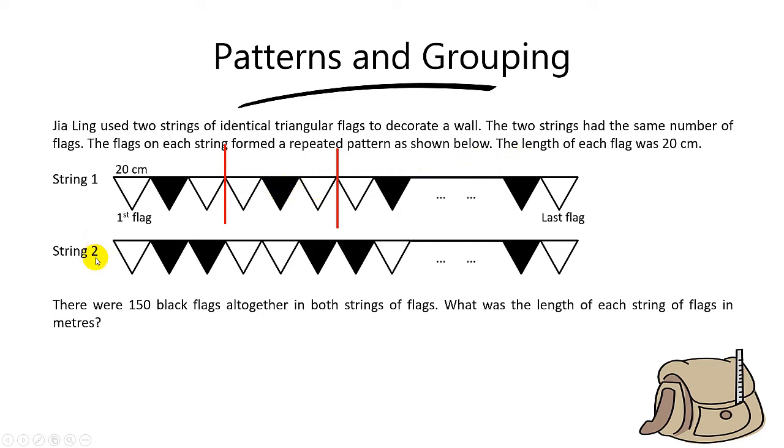While for string 2, the pattern lies in every 4 flags. Can you see? In the first pattern, you have 2 white and 2 black in the middle. Same thing for the second one over here, you also got 2 white and 2 black.